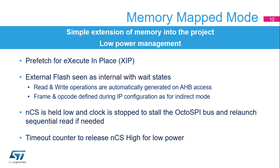The Octo SPI also provides a memory mapped mode. The main application benefit introduced by this mode is the simple integration of an external memory extension, with no difference between read or write accesses of internal or externally connected memory, except for the number of wait states. This mode is suitable for both read and write operations, and external memories — whether RAM or flash — are seen as internal memory, with wait states included to compensate for the lower speed of the external memory. The maximum size supported by this mode is limited to 256 MB. A prefetch buffer supports local execution; therefore, code can be executed directly from the external memory without the need to download it into internal RAM.